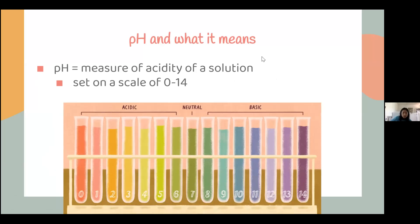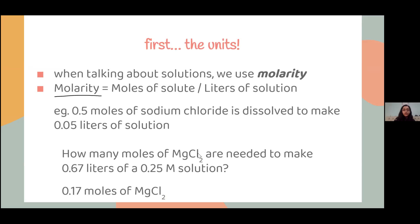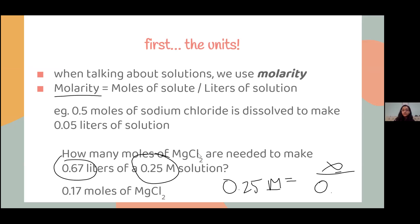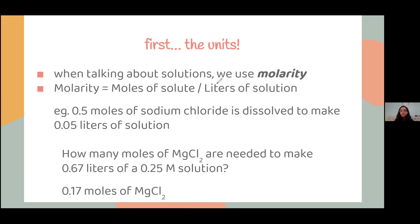A student asks to go back to the second example. The instructor annotates: molarity of 0.25 equals moles over 0.67 liters. To solve for moles (x), you multiply 0.25 by 0.67 liters — that's how you get x, which is the moles of MgCl₂.